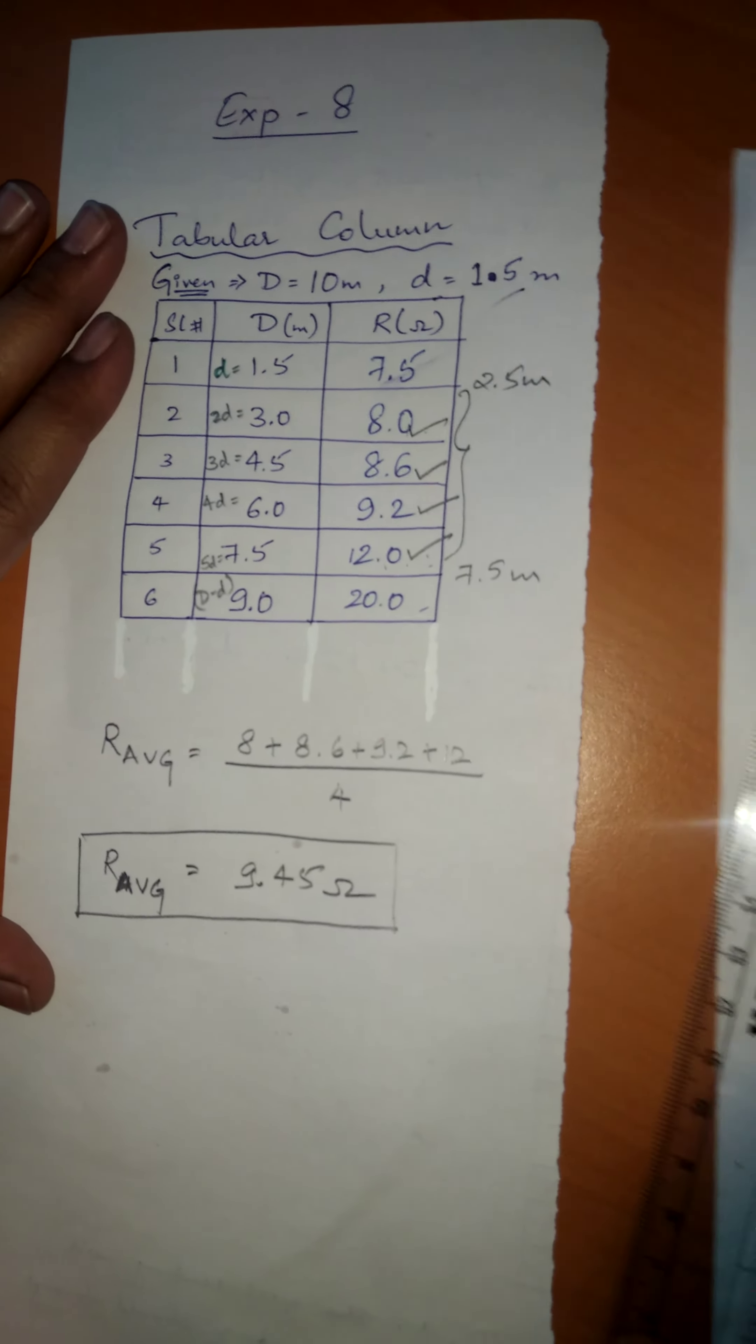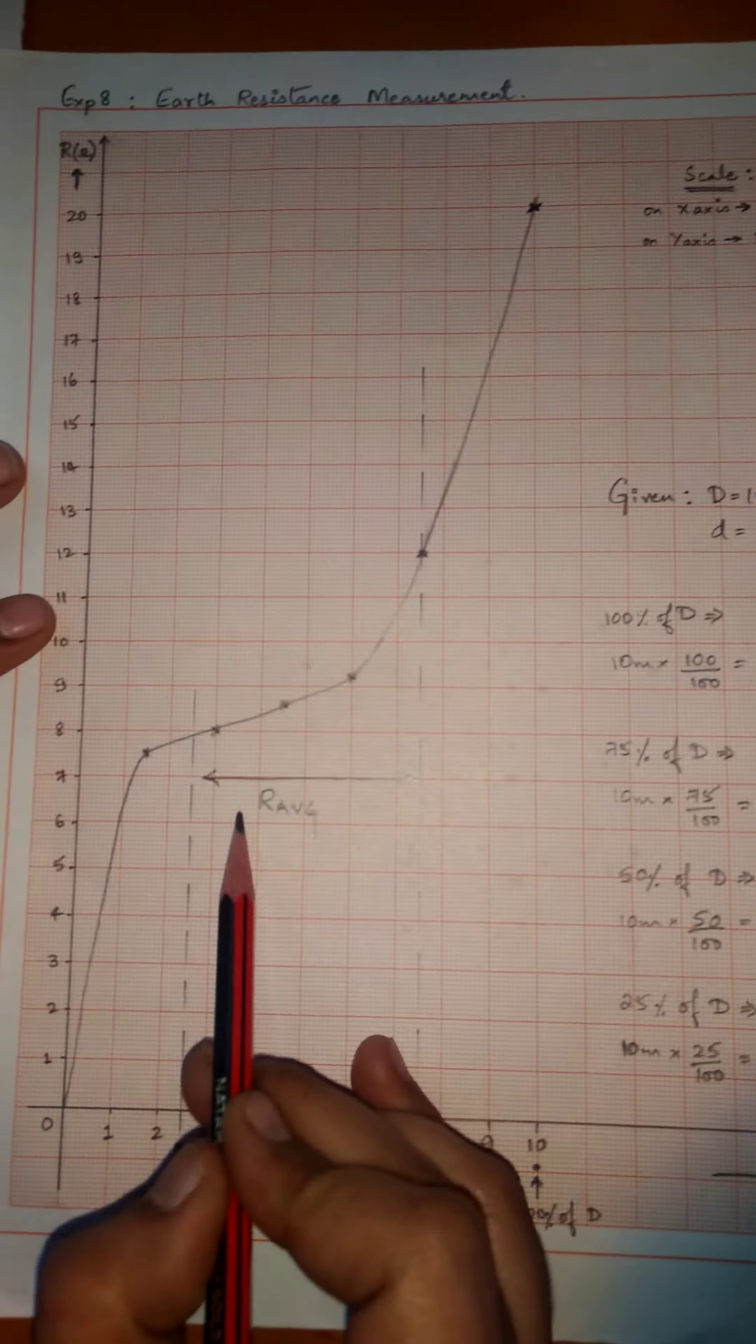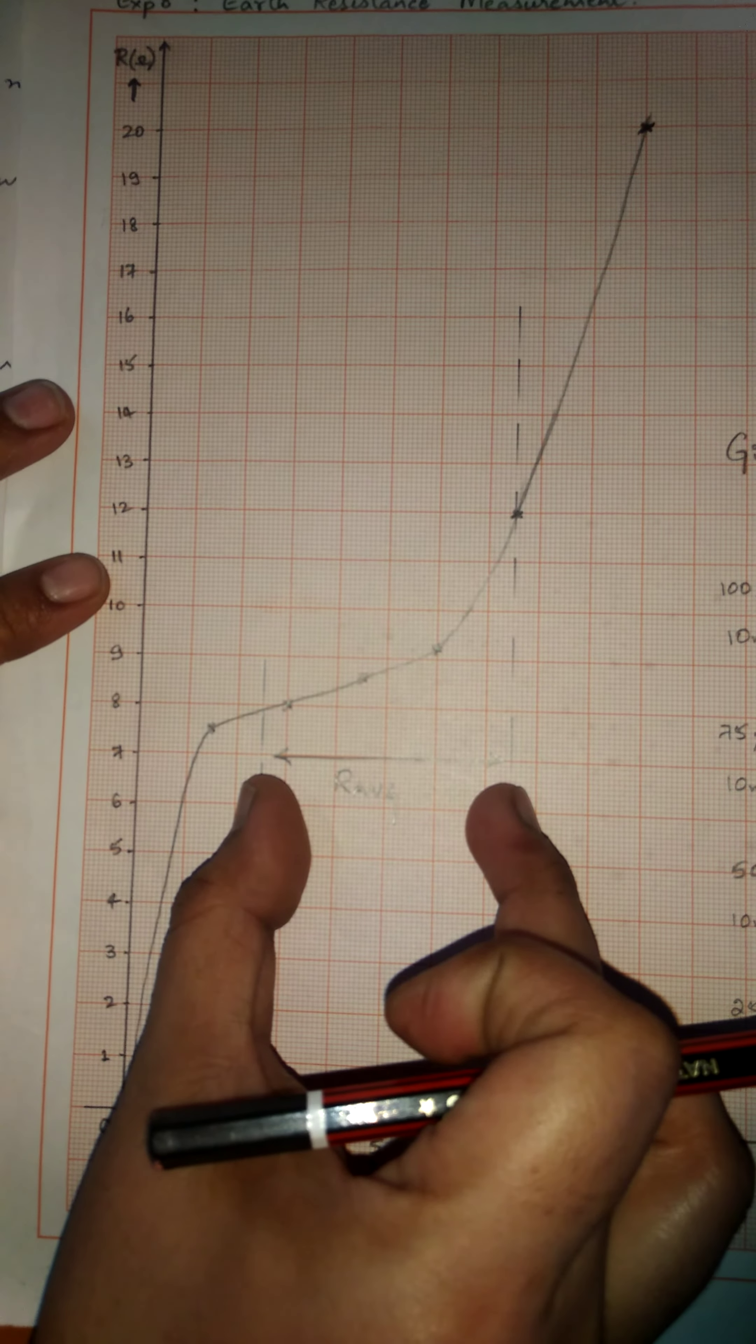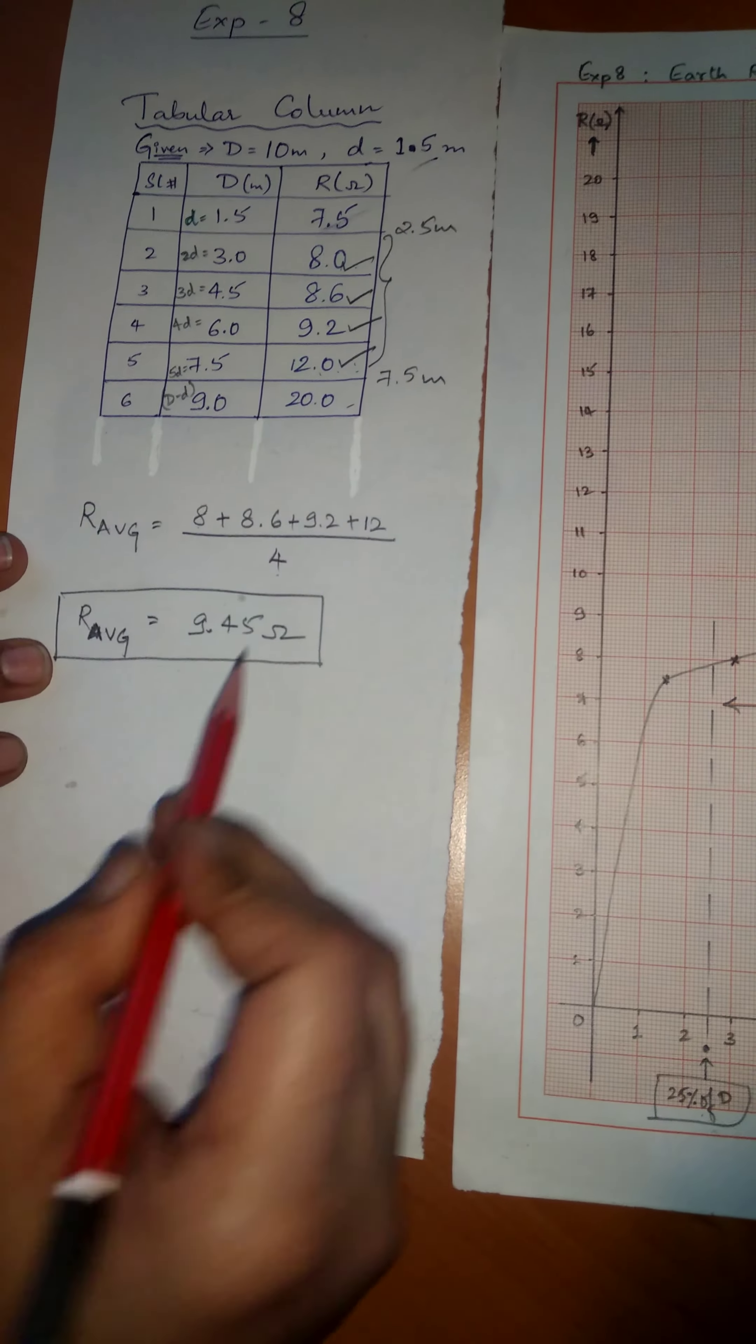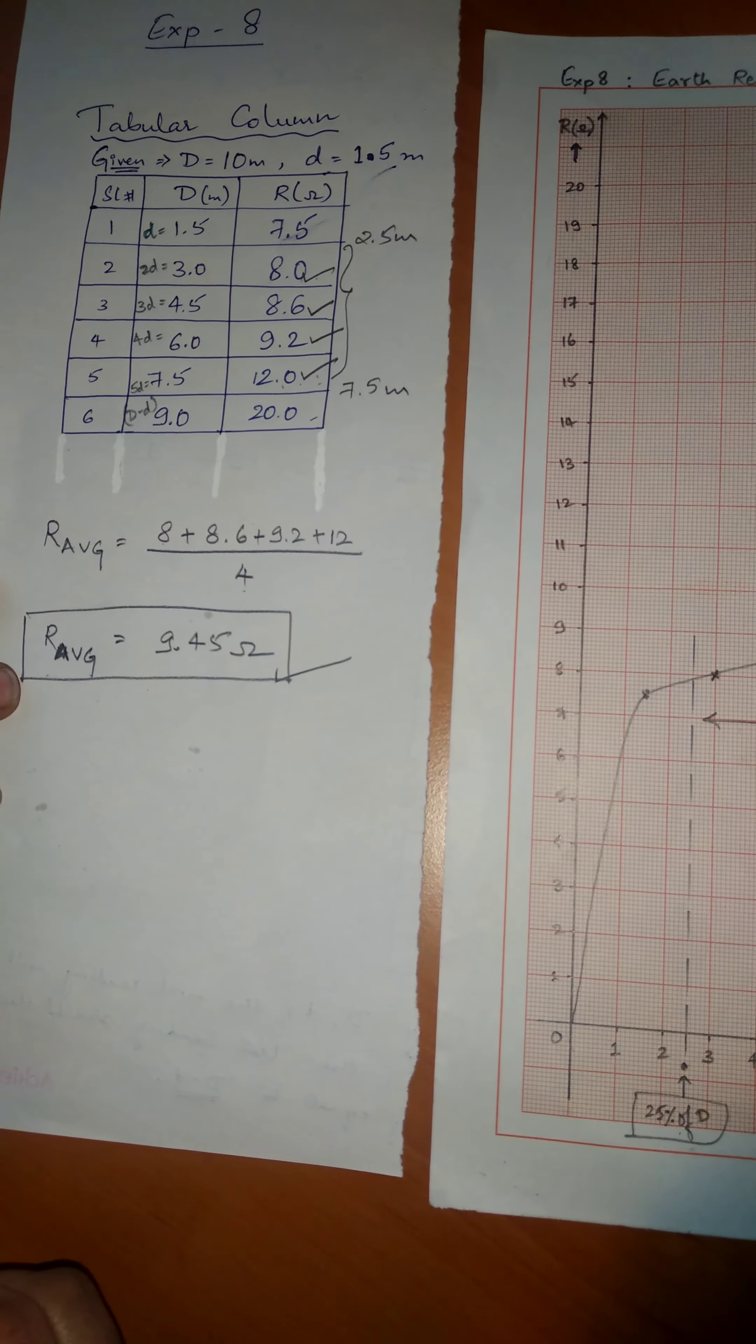As per the calculation and the graph, our average will be the average of the points that fall in between 25% of D and 75% of D. We have taken the average of all those and calculated it. We get our average as 9.45 ohms.